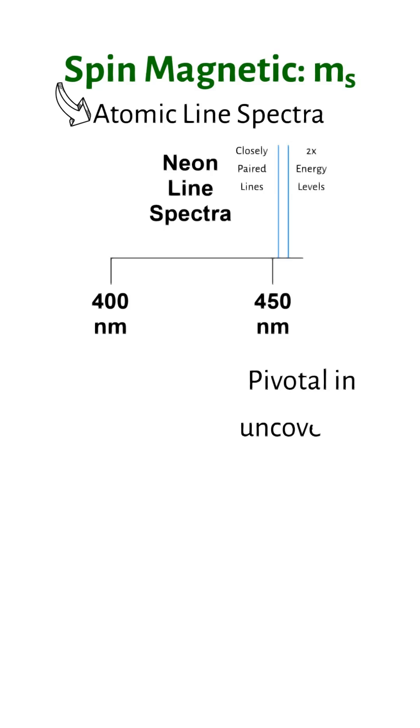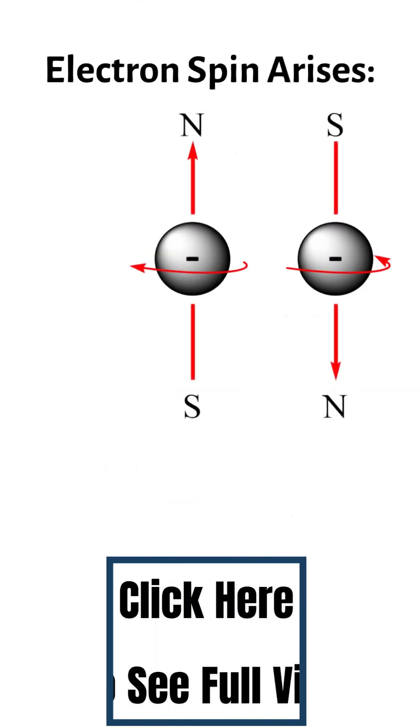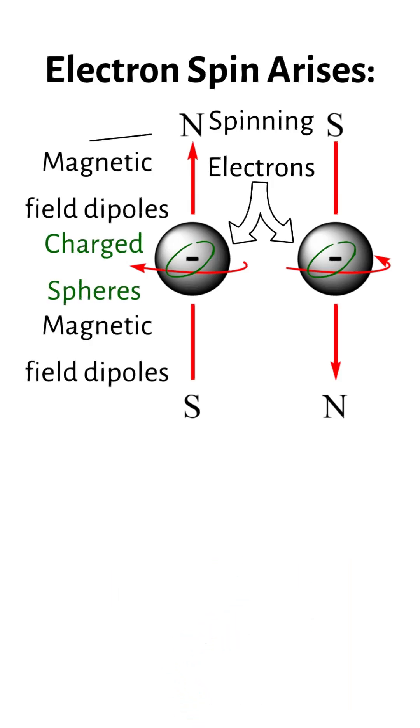This observation was pivotal in uncovering the concept of electron spin and the introduction of the fourth quantum number, the spin magnetic quantum number M sub s. This phenomenon arises because a spinning electron is like a charged sphere and generates a magnetic field dipole with distinguishable north and south poles akin to a bar magnet.